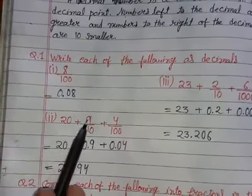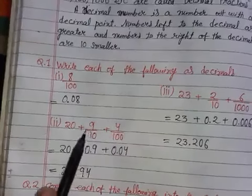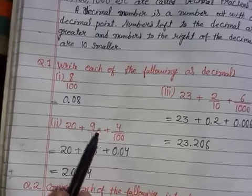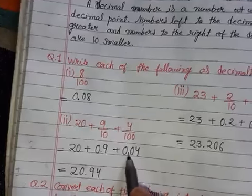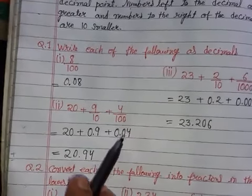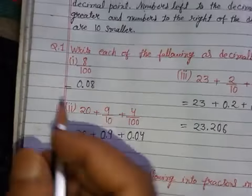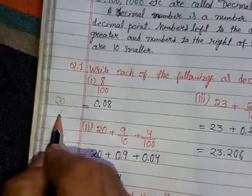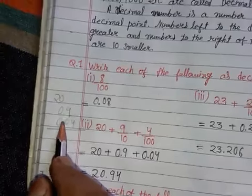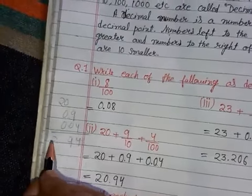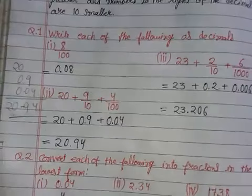Question number 2: 20 plus 9/10 plus 4/100. We write 9/10 as 0.9 because there is one zero, so we place the decimal after one digit. For 4/100, there are two zeros, so we write 0.04, placing the decimal after two digits from the right. For addition, write the whole number first, align decimals in a column, and add simply. The answer is 20.94.